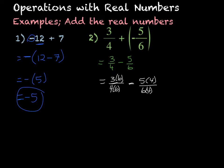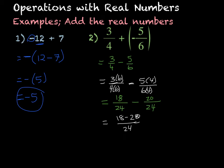In my denominator I have 4 times 6, which is 24, and 6 times 4, which is also 24. 3 times 6 is 18, and 5 times 4 is 20. So I take 18 minus 20 over 24, which gives me negative 2 over 24. Then I simplify the fraction, giving me negative 1 over 12. That is your final answer.